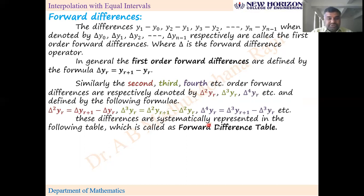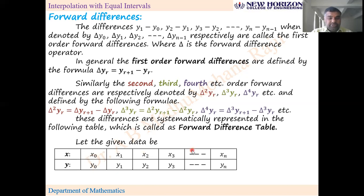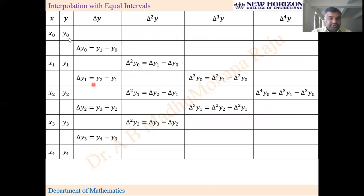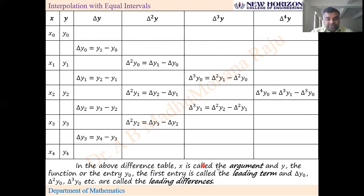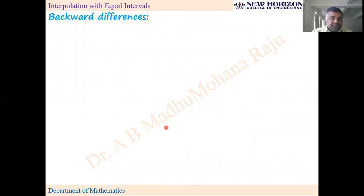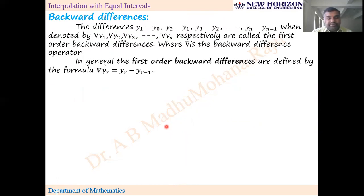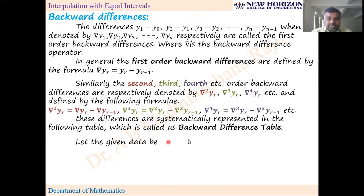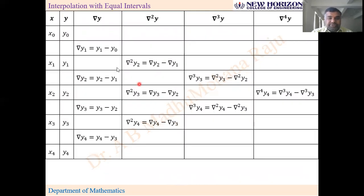These differences are systematically represented in the forward difference table. The table has columns: x, y, first order differences, second order differences, third order differences, fourth order differences — continuing depending on how many values are given. In this table, x is called the argument and y is the entry. The first entry is called the leading term, and Δy₀, Δ²y₀, Δ³y₀ are called the leading forward differences. Similarly, backward differences use the same concept but a different notation — denoted by ∇ (nabla).